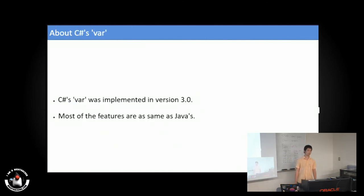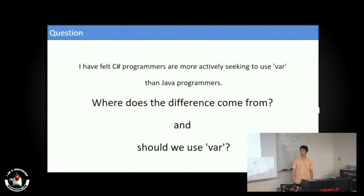C-Sharp also has var, and most of the features are the same as Java. But I feel C-Sharp programmers are more active to use it. Where does the difference come from? And should we use it?